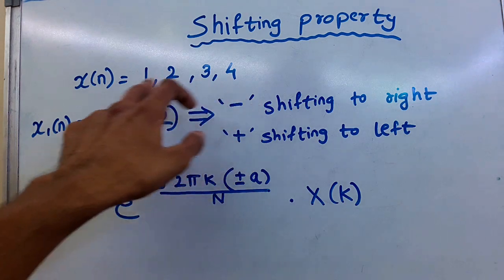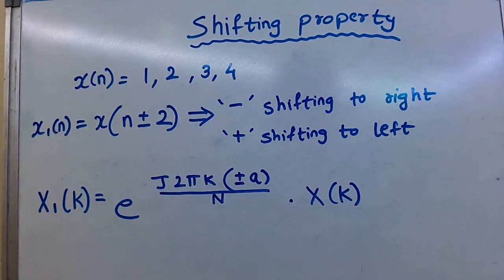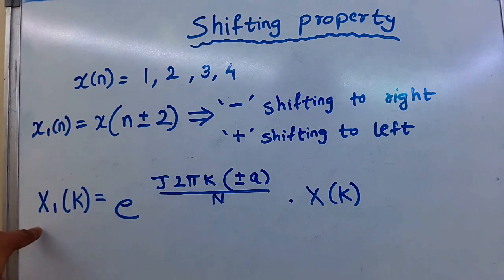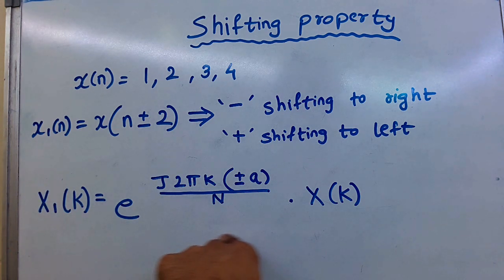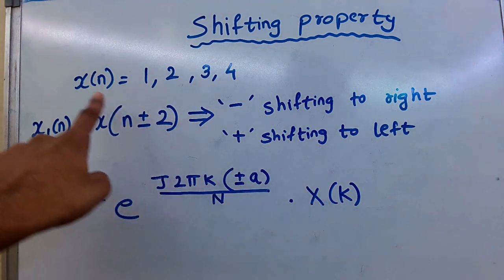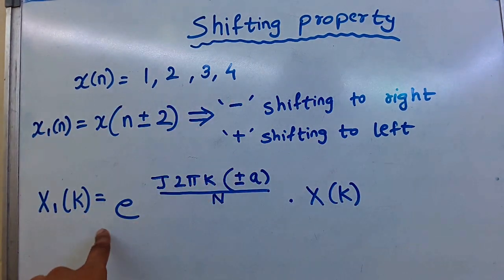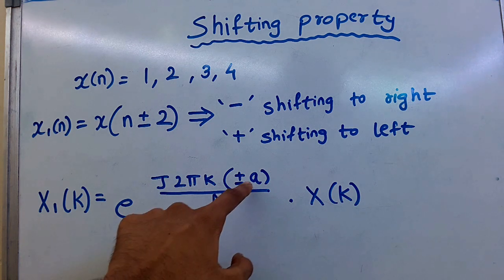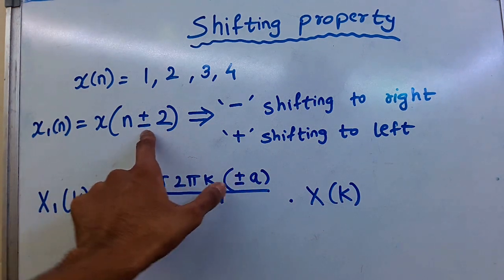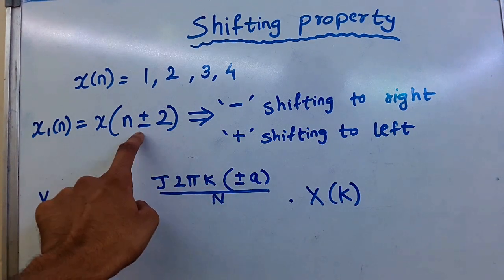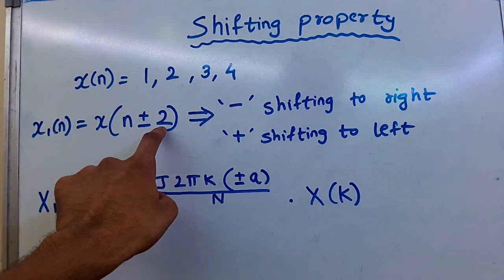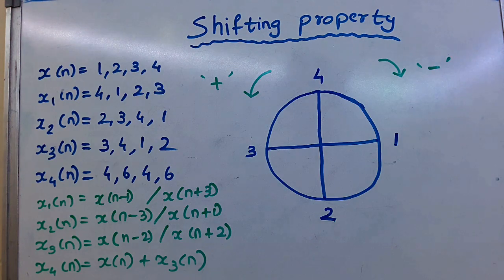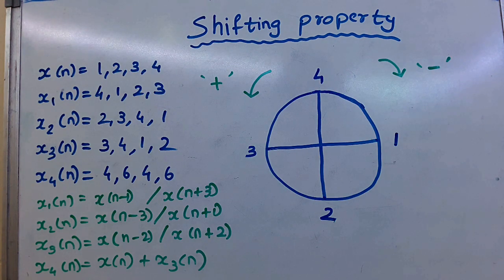For shifted values, the DFT formula is: x1 of k equals e raised to j 2 pi k times plus minus a divided by N, multiplied by x of k. The plus minus sign here depends on the sign in the shifting. If plus there, plus here; if minus there, minus here. This is called circular shifting property.